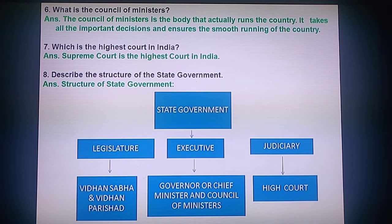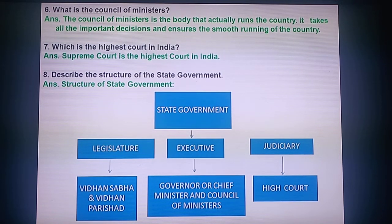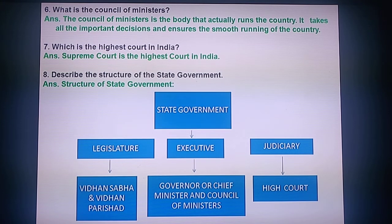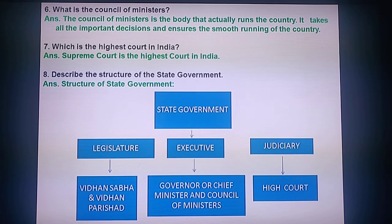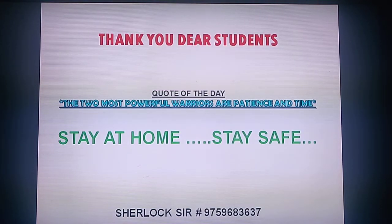Question 8: Describe the structure of the state government. The structure is as follows — under State Government, there are three branches: Legislature (with Vidhan Sabha and Vidhan Parishad), Executive (with the Governor, Chief Minister, and Council of Ministers), and Judiciary (which is the High Court). Please draw this flowchart in your copy using only pencil, not pen.